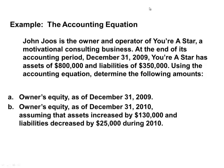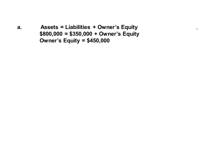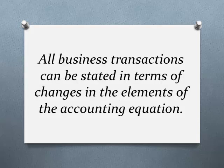Here's an example: John owns Eurostar, a motivational consulting business. At the end of its accounting period, assets are $800,000 and liabilities are $350,000. If you know two of the three elements, you can find the third. So equity equals $450,000.